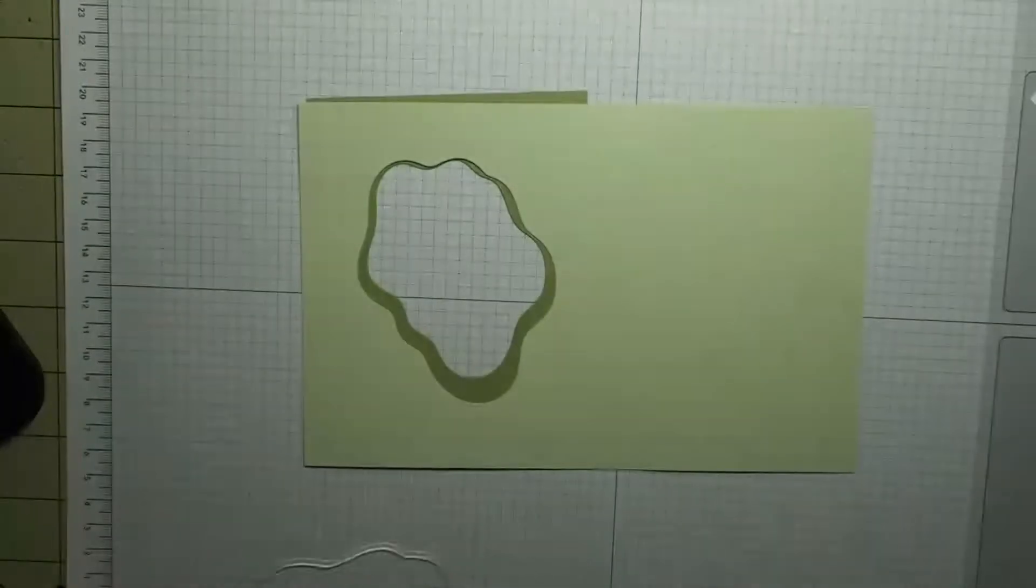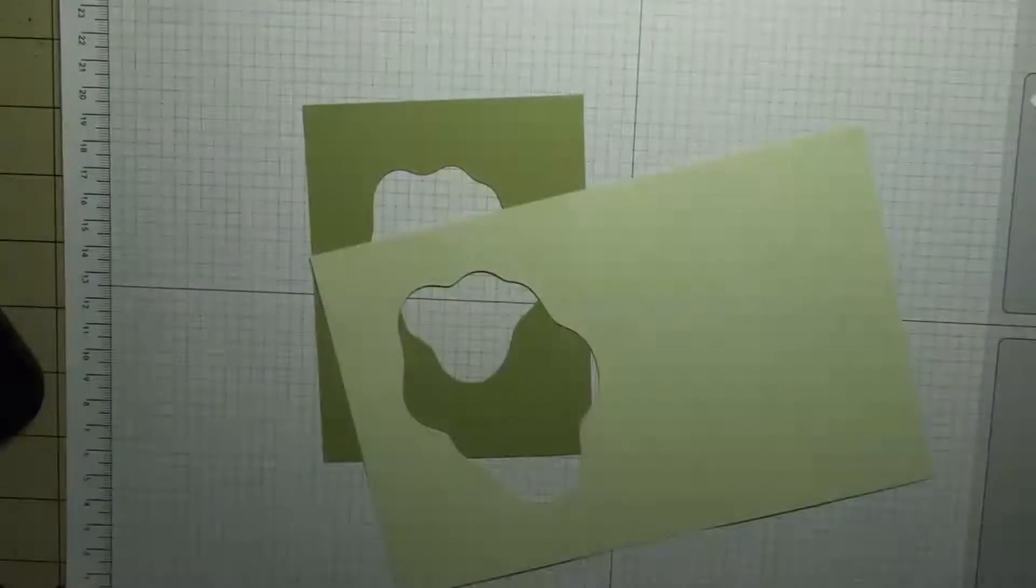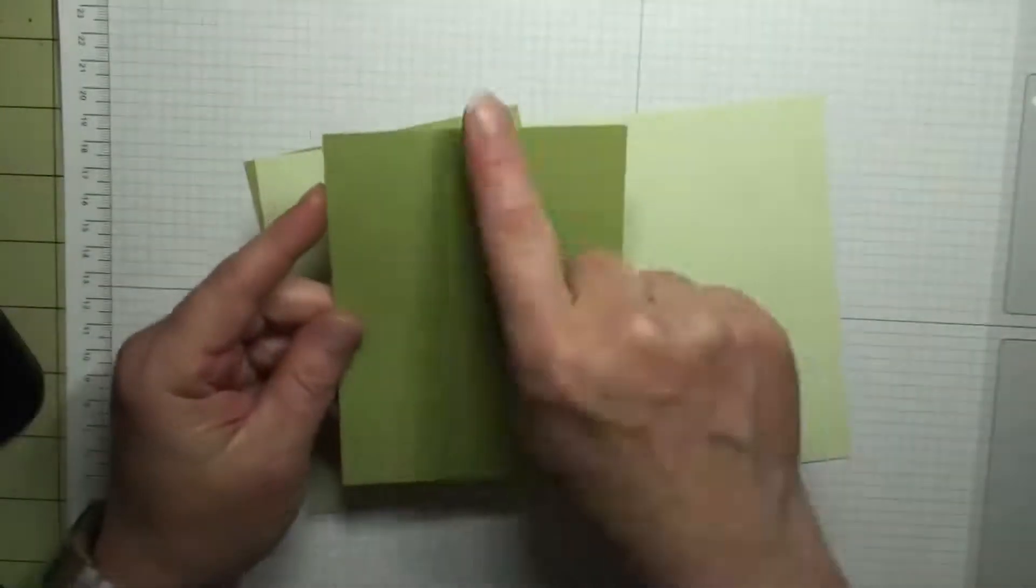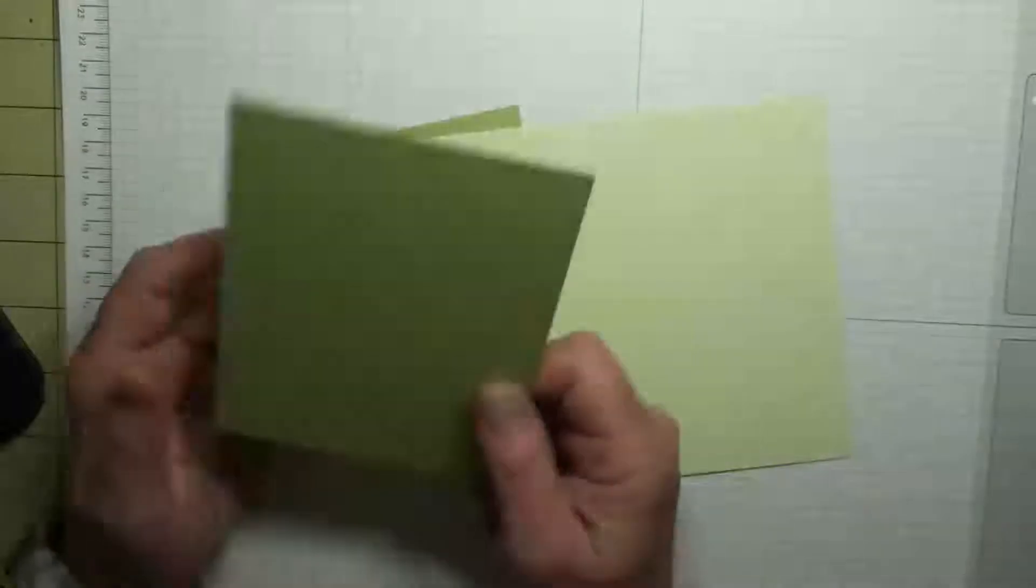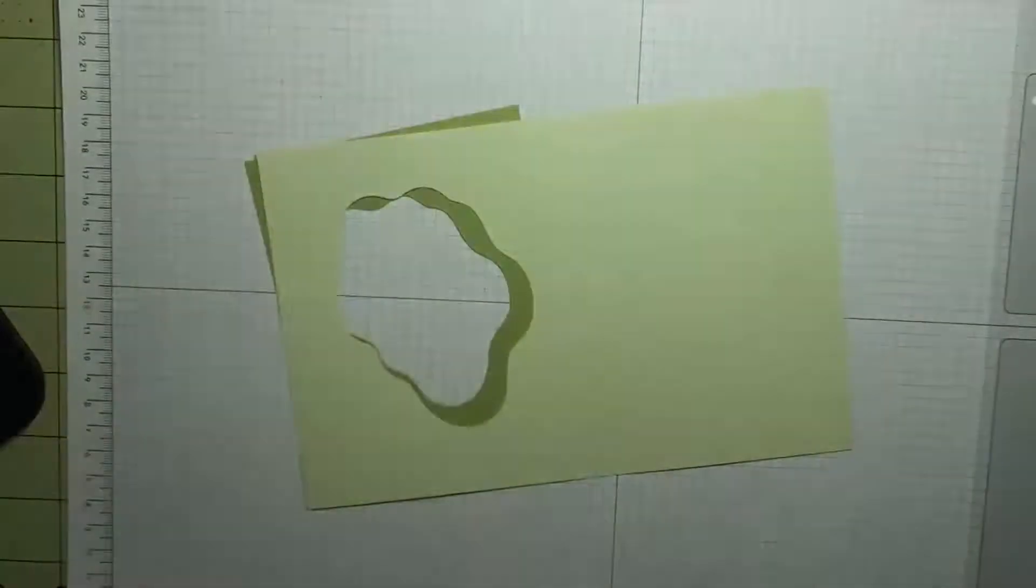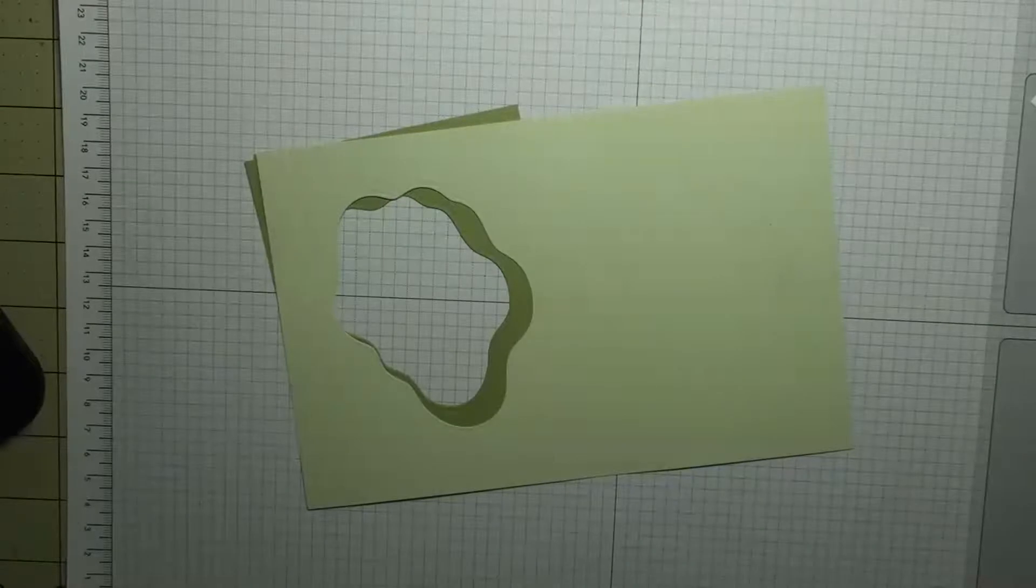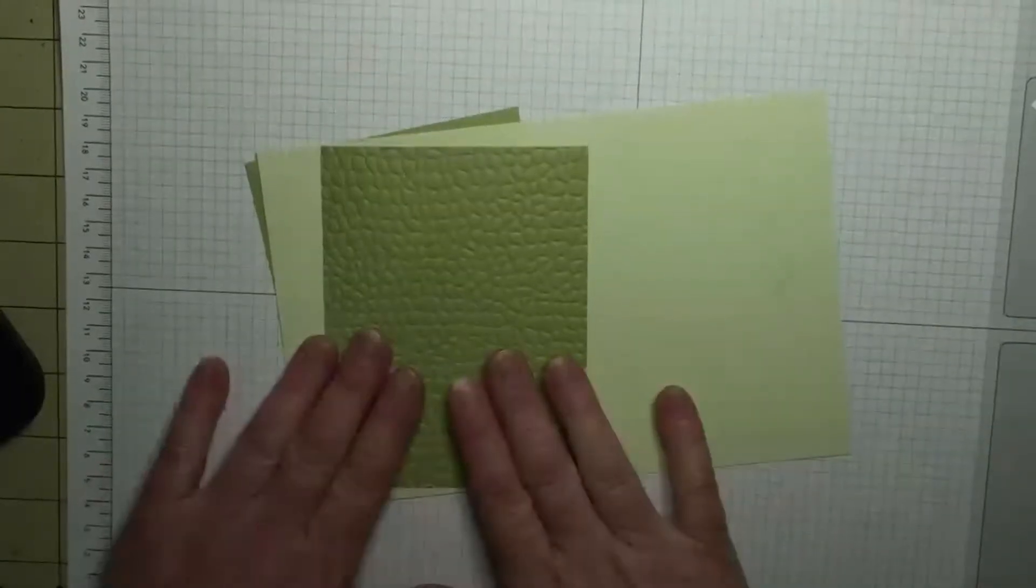The other thing I need to do is I need to take this piece, which is the four by five and a quarter piece, and I need to emboss it. So I'll be right back. And through the magic of television, here we are, it's embossed.